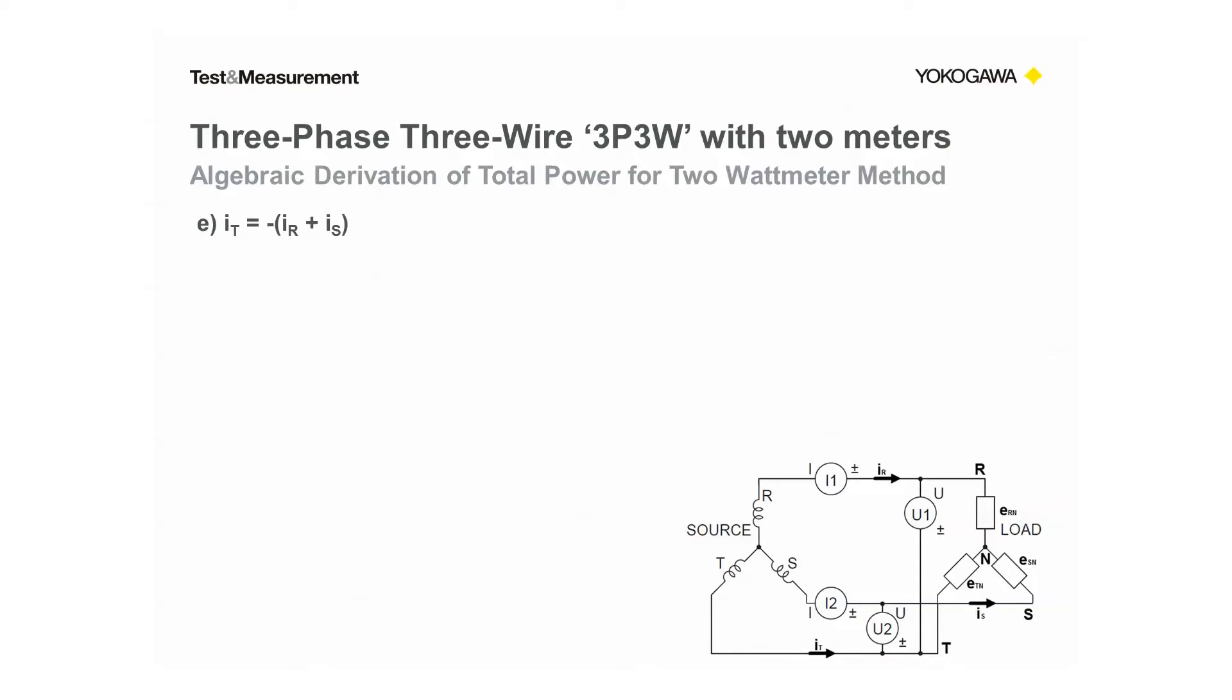The very last step is to write the total power equation again here in terms of the internal voltages. And by substituting IT with minus IR plus IS, we will solve for total power again in this equation here.